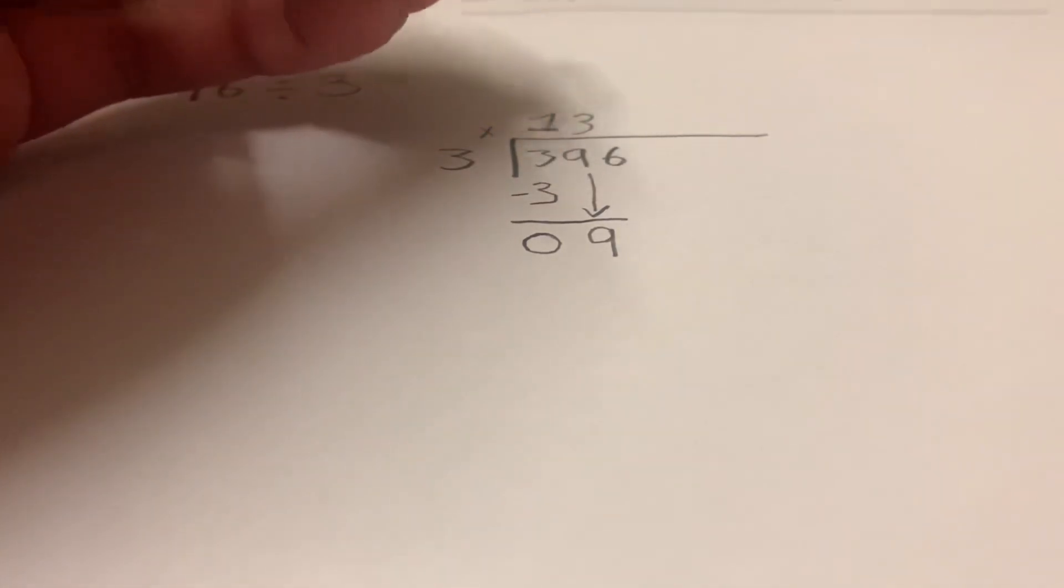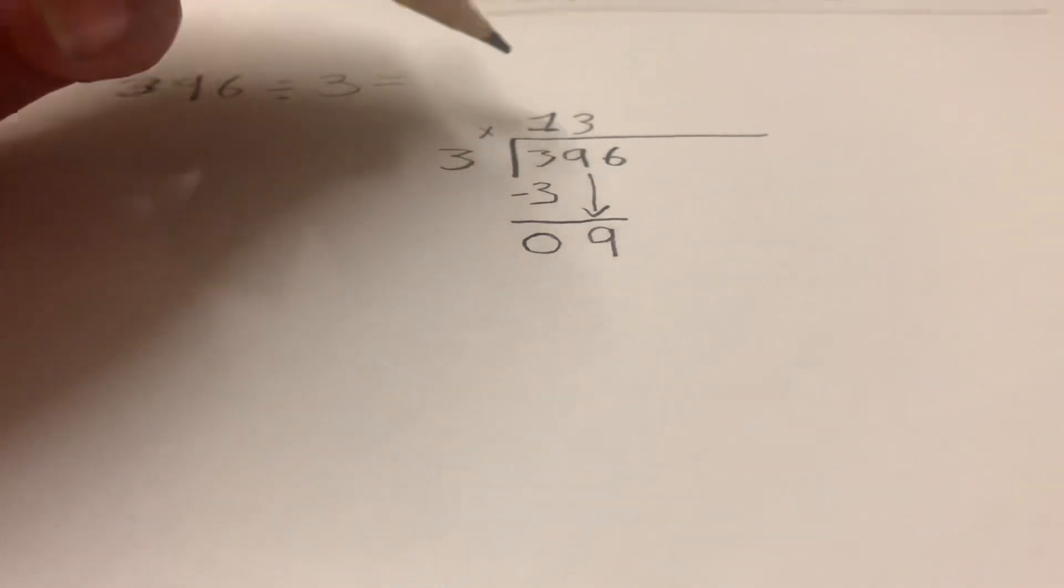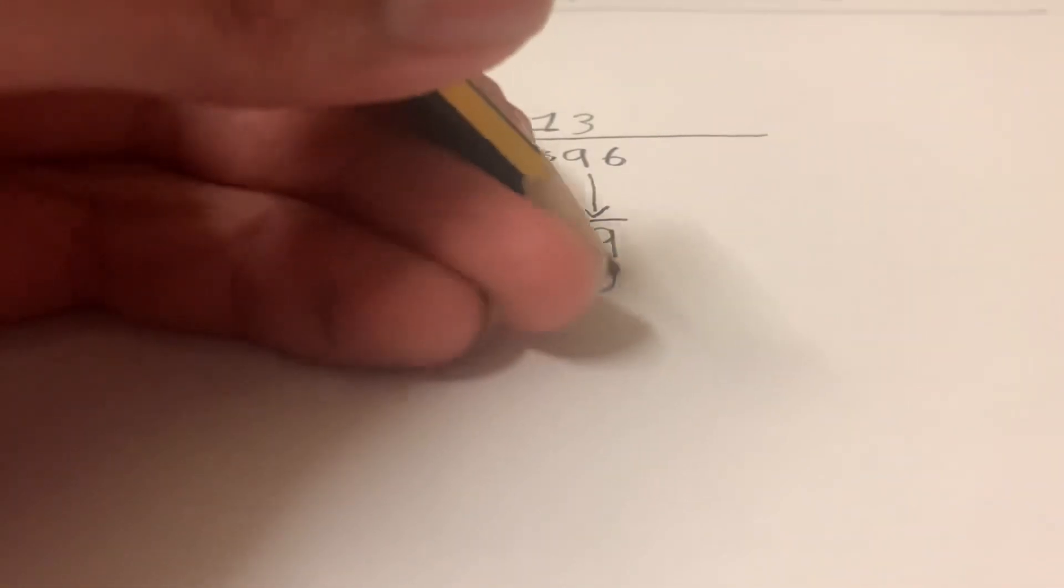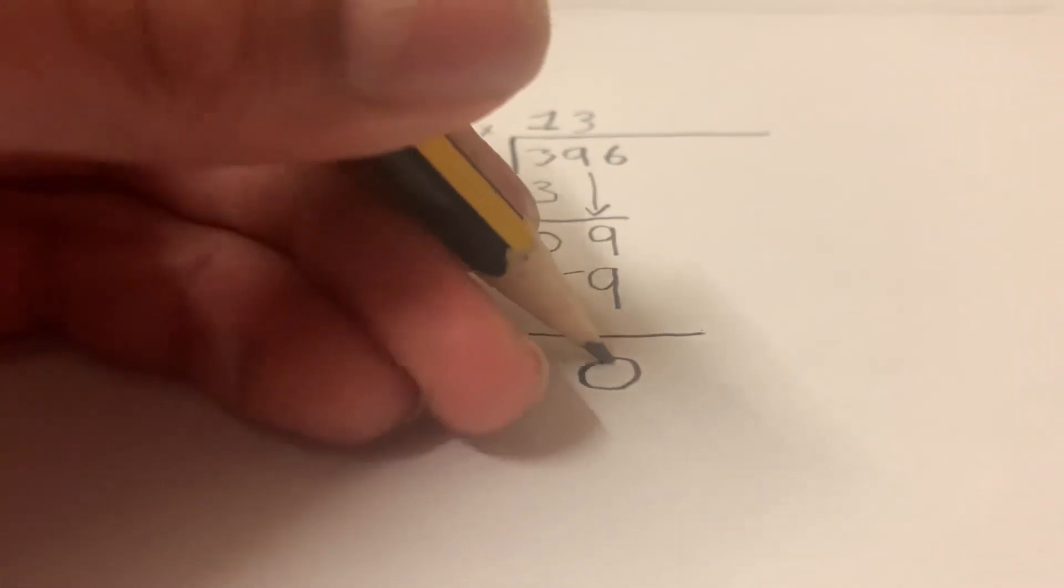And then you're going to repeat your steps. Nine divided by three, which is three. And three times three is nine. And you're going to subtract nine, take away nine, which equals zero.